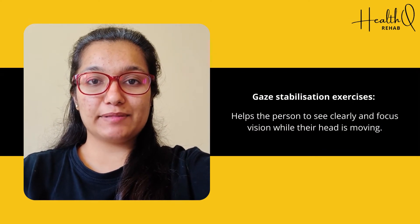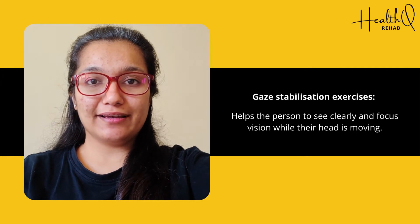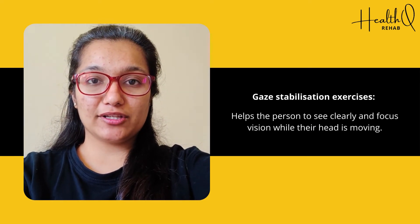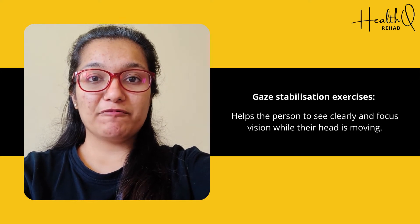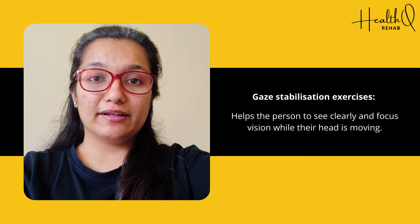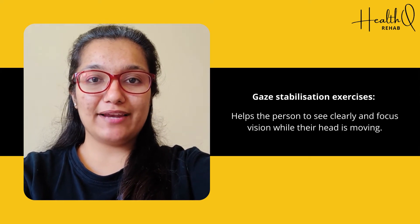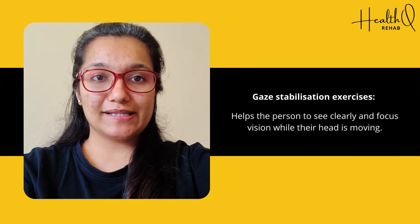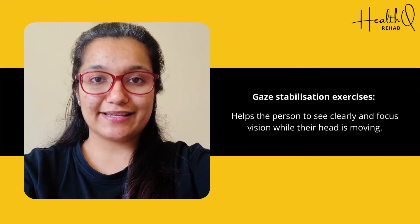This exercise helps the eye to see clearly when the head is moving. Vestibular rehabilitation therapy helps the vestibular system to maintain a fixed, clear visual feedback when the head is moving in a dynamic and stable environment. Any disturbance in the vestibular system causes blurring of vision with dizziness.